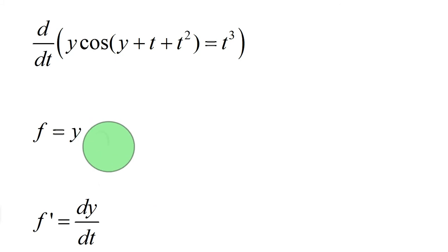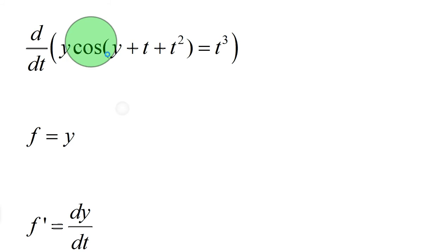We're going to use the product rule here. We're going to label y as f and cosine of y plus t plus t squared as g. So it'll be f prime g plus f g prime. However, within g, which will be right here – this is going to be g and this is going to be f, just the y – you can see that within g, we're going to have the chain rule. So it's a product rule and a chain rule.